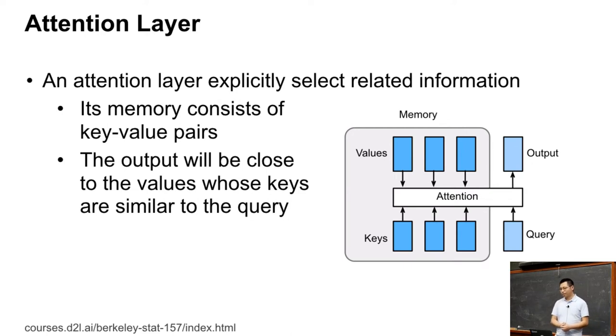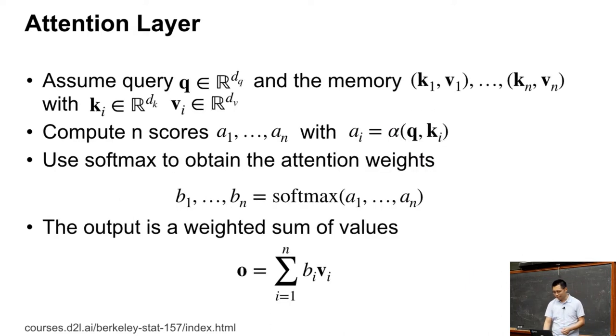The overall idea is, given the query, I compute the similarity between the keys and the queries, using the softmax to get the score, and then return the output, which is a weighted average of the values. So by this way we explicitly select from the memory given the query.